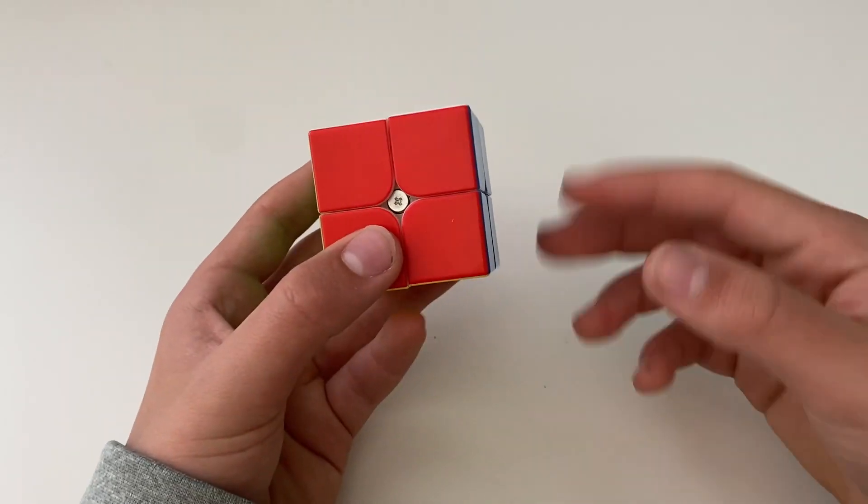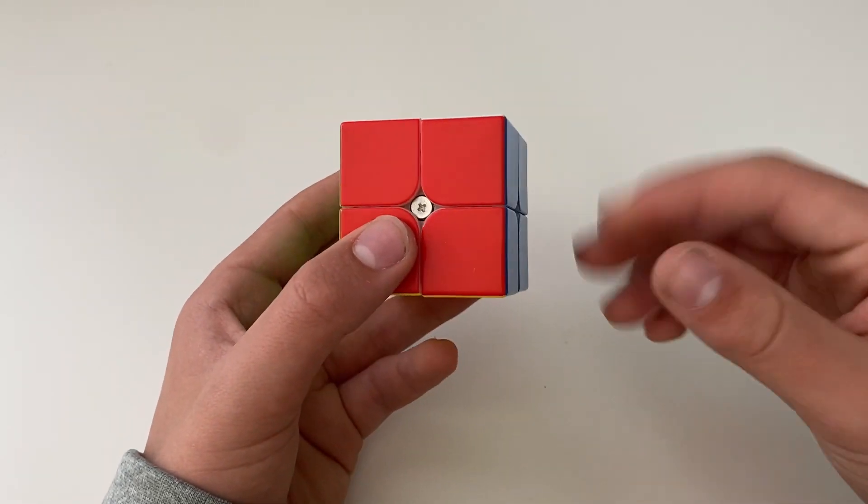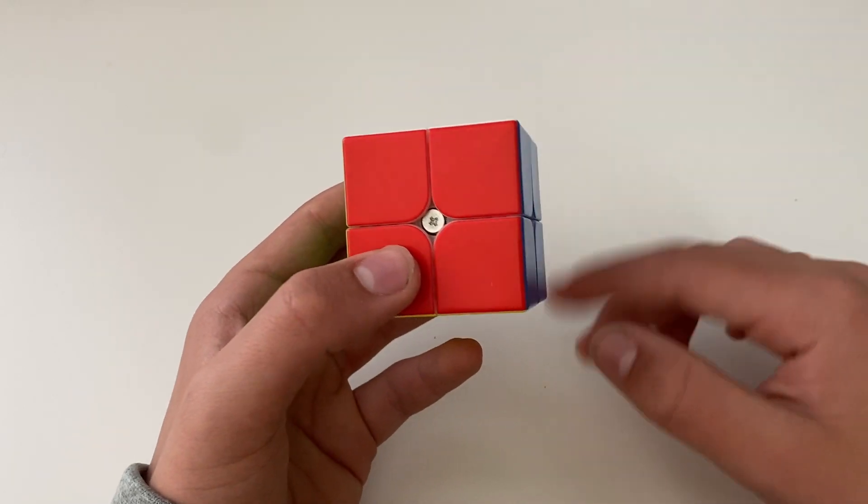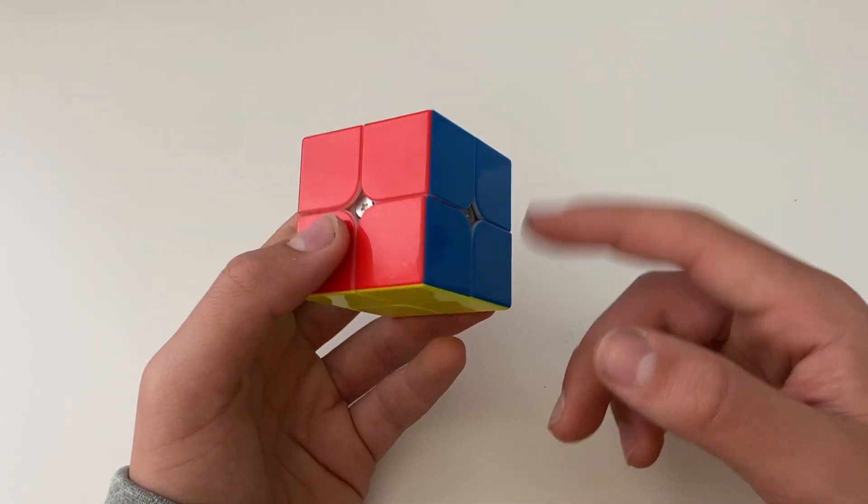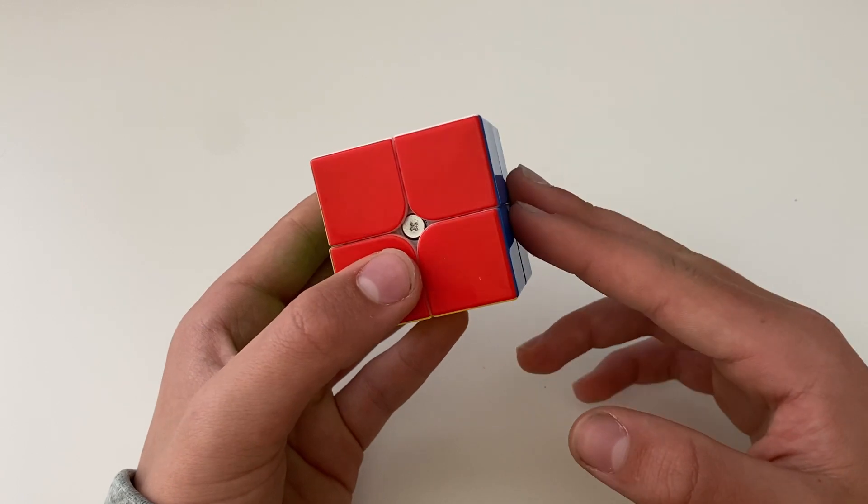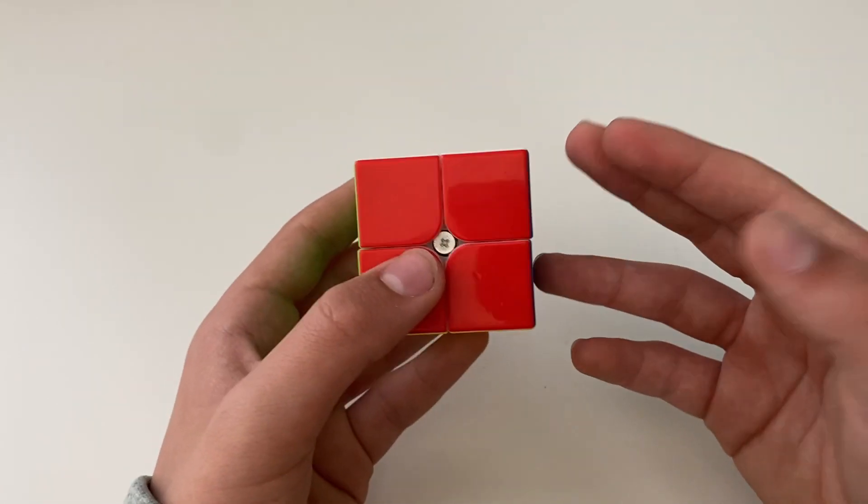PBL on the 2x2 is a more advanced method that more advanced speedcubers use because it will allow you to reduce the moves that you do in the 2x2 and it will also improve your performance altogether because there aren't as many moves.